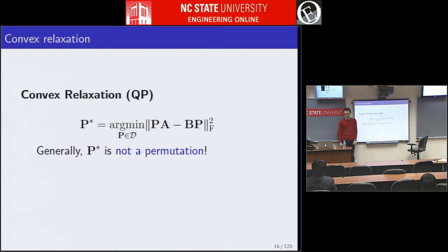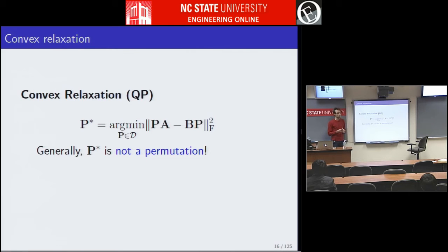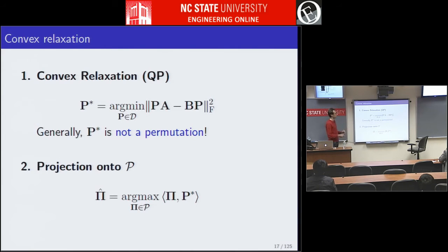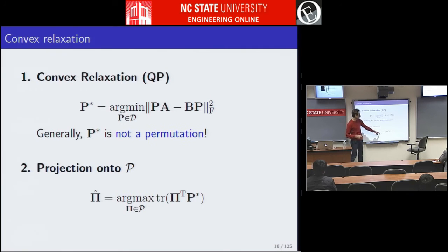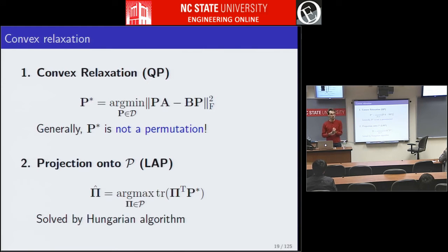I will look at this relaxation. The problem with convex relaxation is that if you take the minimizer P*, it will not be a permutation matrix in general. So one needs to quantize the relaxed solution back onto the space of permutations — project it. One way to do this projection is to maximize the inner product between your solution P* and a permutation, which is a linear objective: maximize the trace. This is the linear assignment problem, solvable in polynomial time using linear programming or Hungarian algorithm.